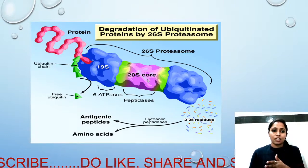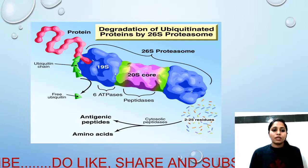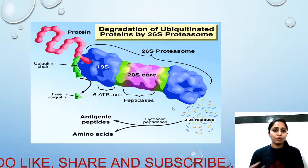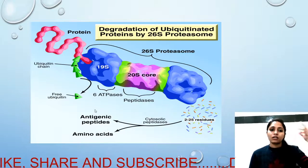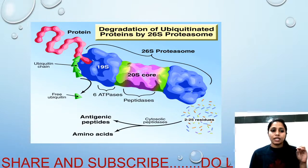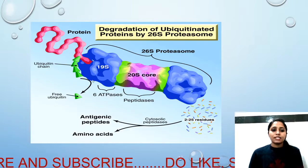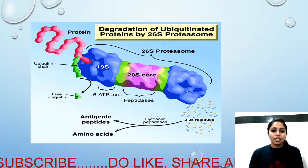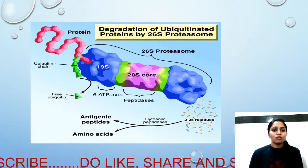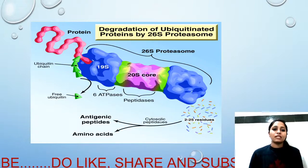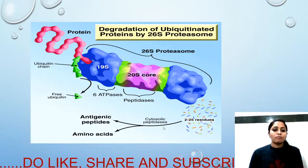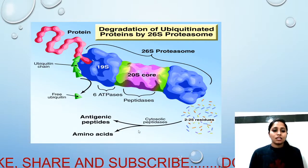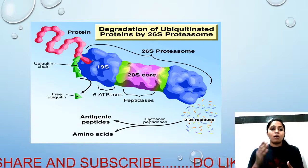Inside the 20S core, the protein is broken down into small peptides and oligopeptides. Importantly, ubiquitin is released intact and is not degraded — it is recycled and reused for other proteins. The protein is degraded into fragments of approximately 2 to 25 residues in length.